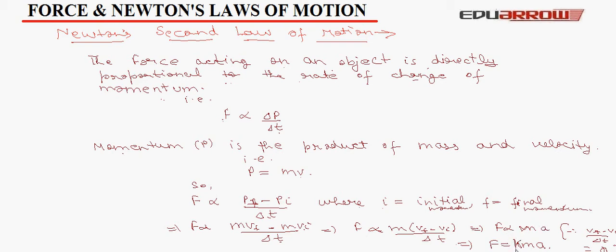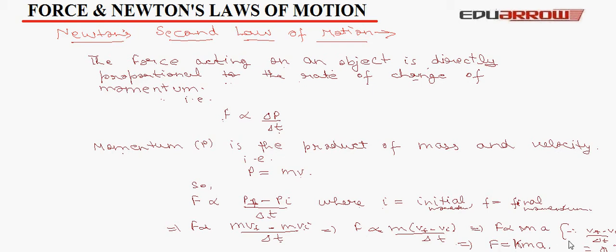So, now we have F is equal to K M A. And the value of F, M and A are so chosen in the SI system of units that K comes out to be 1. So, we get F is equal to M A. So, the SI units of force is kg, that is the unit of mass, and meter per second square, unit of acceleration. That is equal to kg dot meter per second square. This is called 1 Newton.